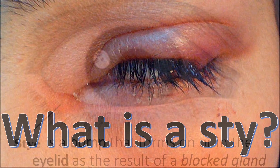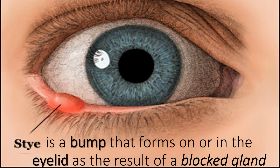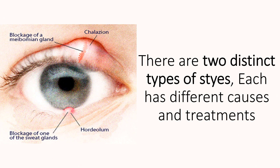What is a stye? A stye is a bump that forms on or in the eyelid as the result of a blocked gland. There are two distinct types of styes, each with different causes and treatments.